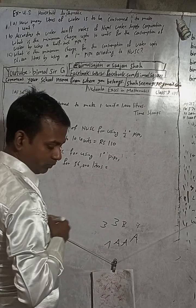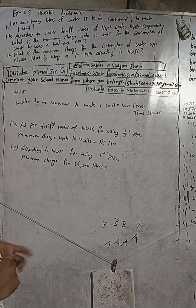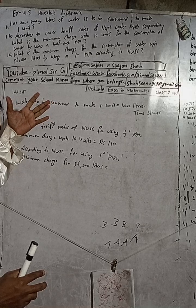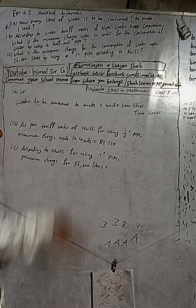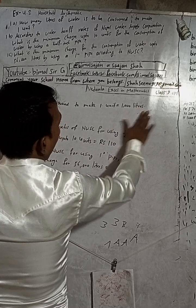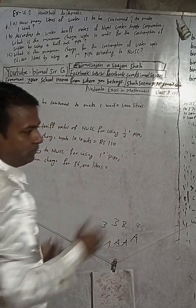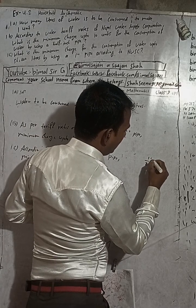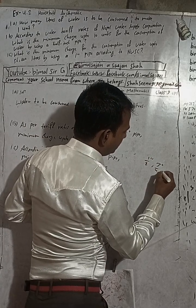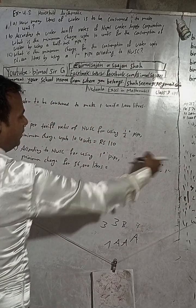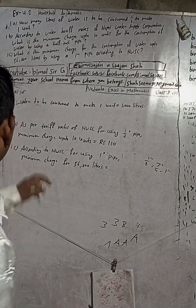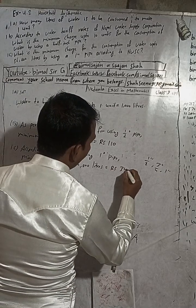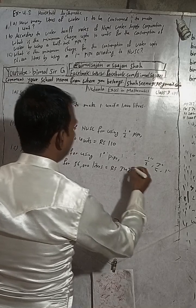You can check the table, but you should learn the table for the exam. If they don't provide the data table, it will be difficult. There are different pipe sizes — half inch, three-quarter inch, one inch, and more — each with minimum charges listed in the book. The answer is Rs. 3,420, which is the book answer.